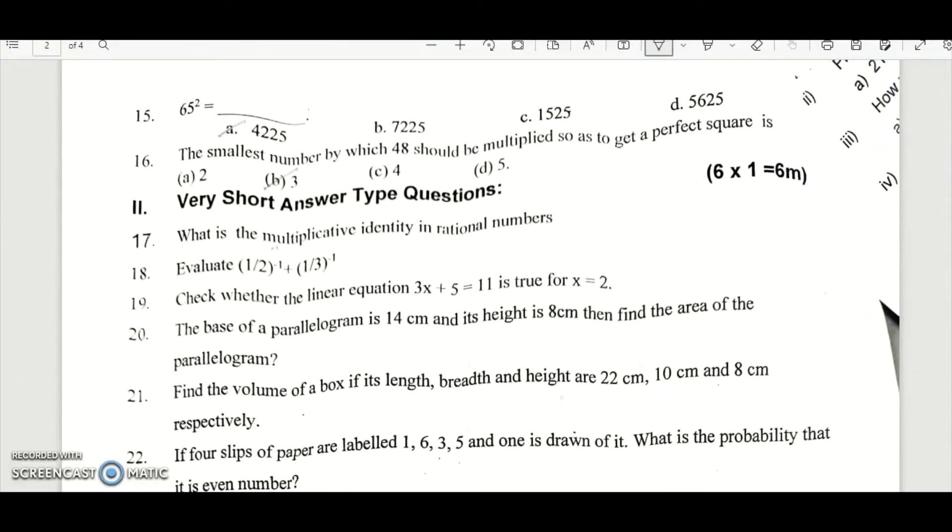Question number 15. 65 square equal to 65 square, if you calculate, it is equal to option A, 4225. The smallest number by which 48 would be multiplied to get a perfect square, this is option B, 3.